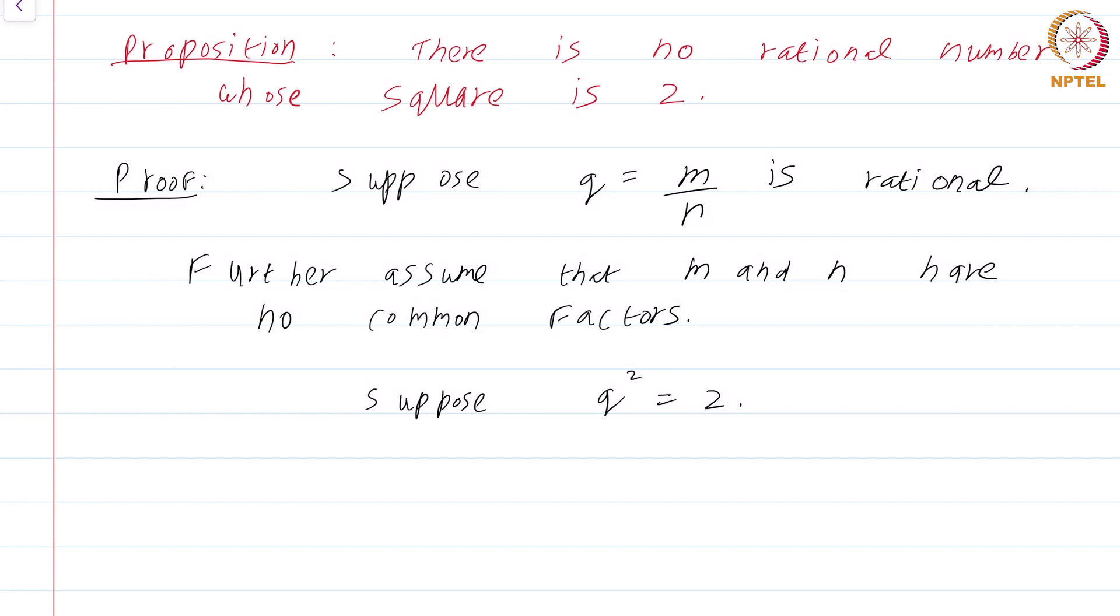This just means that m²/n² = 2, or in other words m² = 2n².